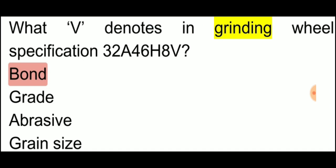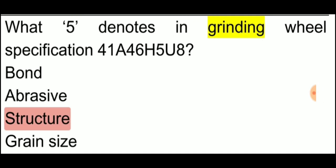V denotes in grinding wheel the bond. V denotes in grinding wheel what does it indicate? Bond. Five, the five given here in the specification denotes structure.